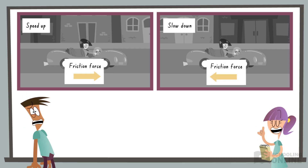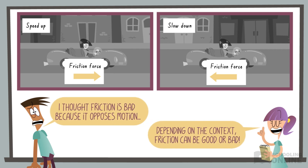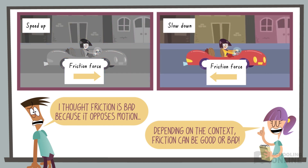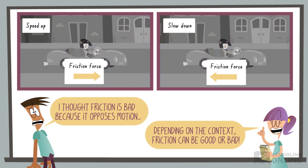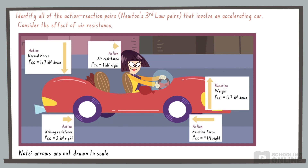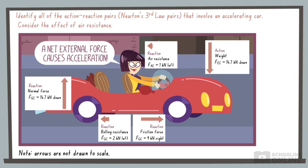To summarise, friction isn't always bad. Depending on the context, it enables objects to speed up or slow down. This image summarises all of the action-reaction pairs that we discussed. Half of these are forces that the car exerts on its environment, and the other half are external forces that the environment exerts on the car.